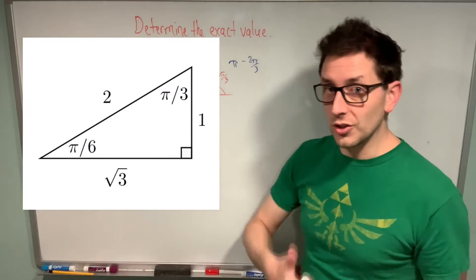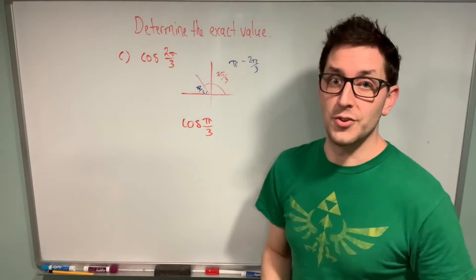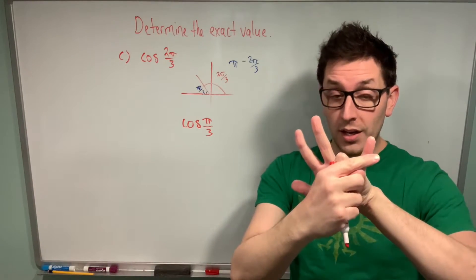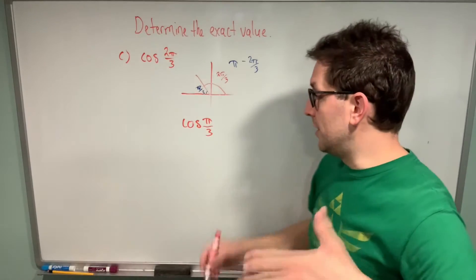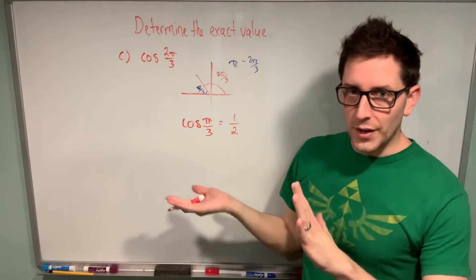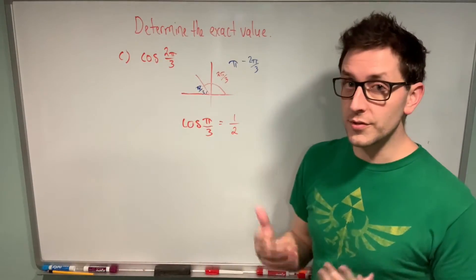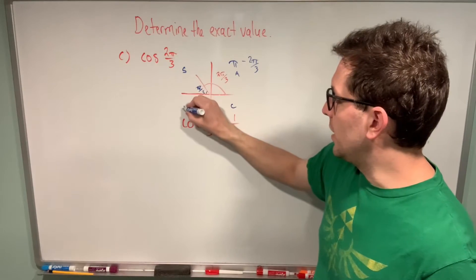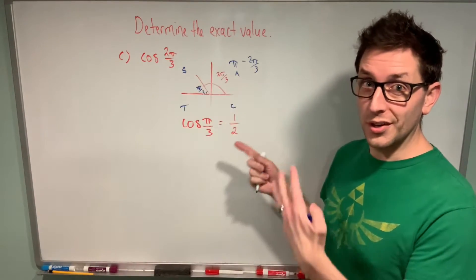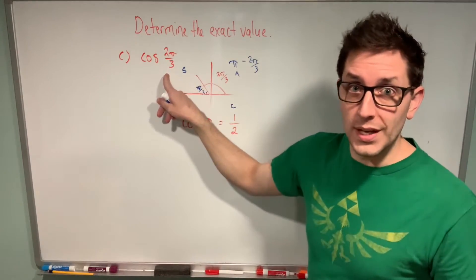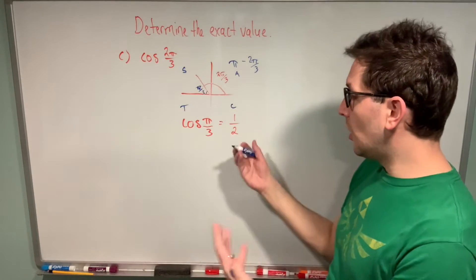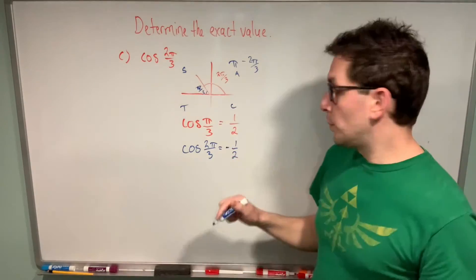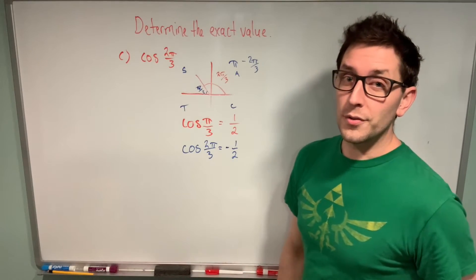We're going to use that reference angle of pi over three, find what the cos of pi over three is, and use that to understand the value of cos of two pi over three. Using the hand trick: pi over three is 60 degrees, put that finger down, look to the right — one finger — take the square root and divide by two, giving one over two again. But is that enough to conclude cos of two pi over three is also one half? Not exactly — we have to check the cast rule. The cast rule says only sine is positive in that quadrant, so since we're working with cosine, the exact value of cos of two pi over three is going to be negative one over two.